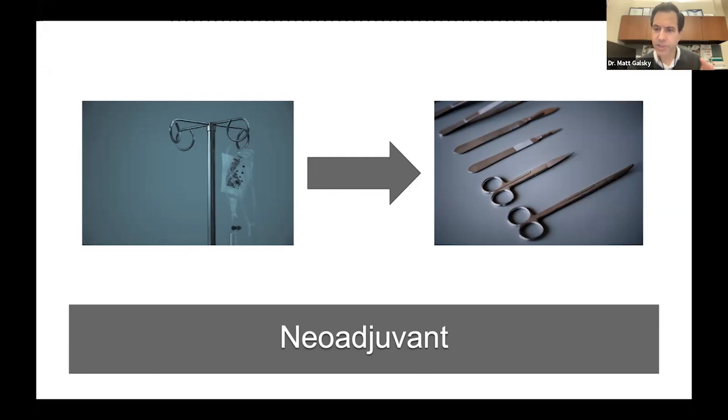The stage of bladder cancer, what's called the T stage or the stage of the primary tumor, is measured by the depth of invasion of a tumor into the wall and through the wall of the bladder.